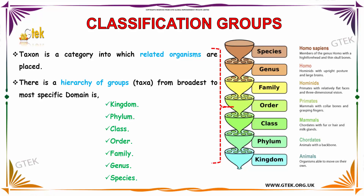Here you can see the species is Homo sapiens, genus is Homo, family is Hominidae, order is primates, class is mammals, phylum is Chordata, and kingdom is animals. These are all the classification levels.